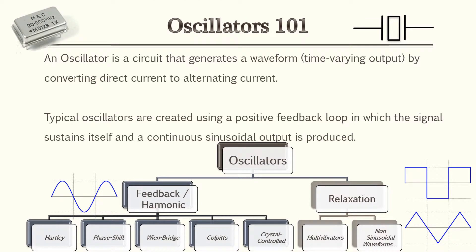For this lesson we'll be focusing on oscillators. An oscillator is a circuit that generates a waveform — a time-varying output — by converting direct current to alternating current. Typical oscillators are created by using positive feedback loops in which the signal sustains itself and continues a sinusoidal output.